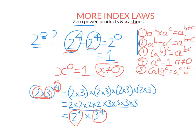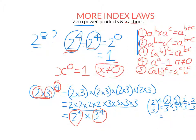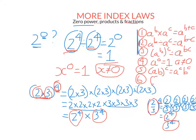Rather than two times three to the power of four, let's say we had two over three to the power of four. We know that's just multiplying two thirds by itself four times. When we're multiplying fractions, we multiply all the tops together — that's two to the power of four — and multiply the bottoms together — that's three to the power of four. So when we take a fraction and raise it to a power, we just raise the top to that power and the bottom to that power. That's our sixth index law.